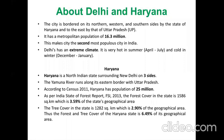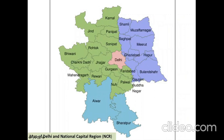This is the map of Delhi NCR, which is an administrative unit encompassing the state of Delhi as well as quite a few districts in Haryana, Rajasthan, and UP. It covers about 200 kilometers in all directions from the borders of Delhi.